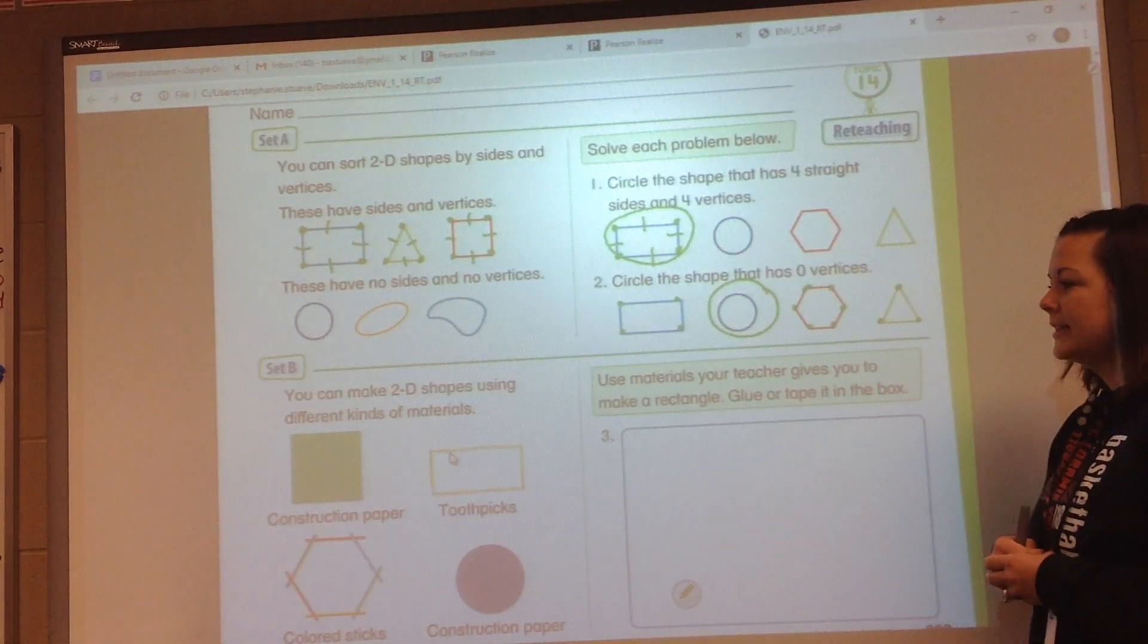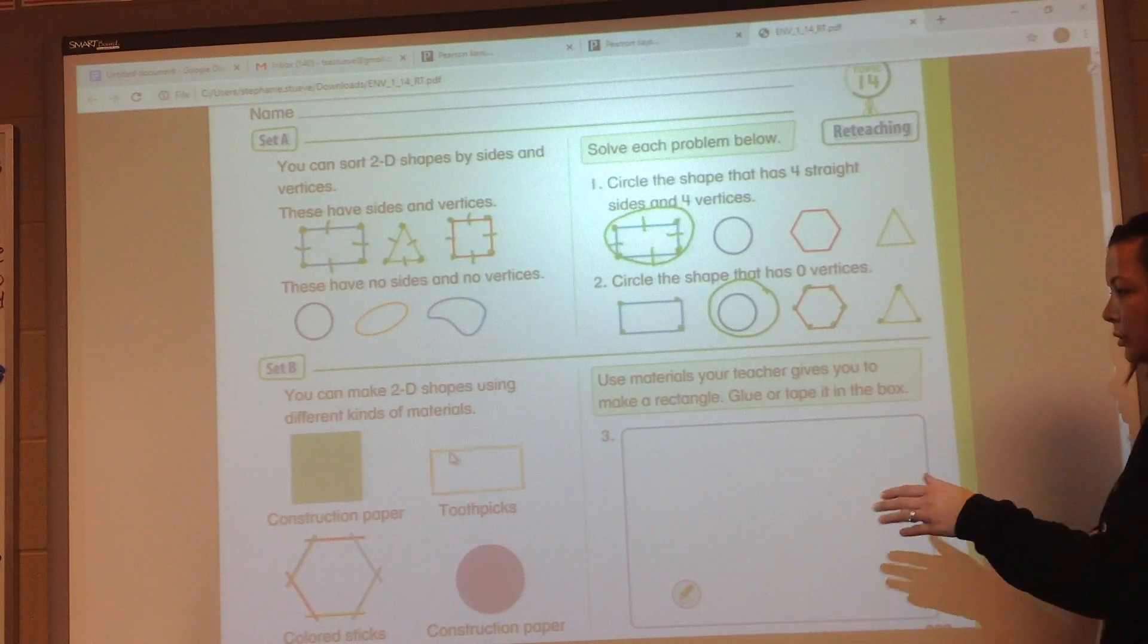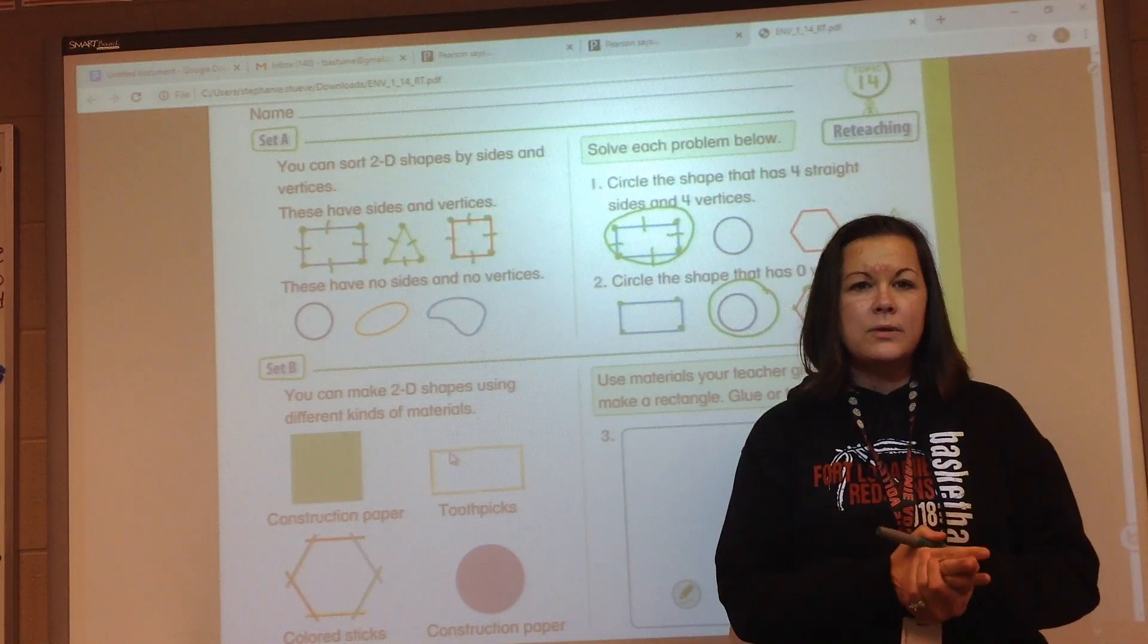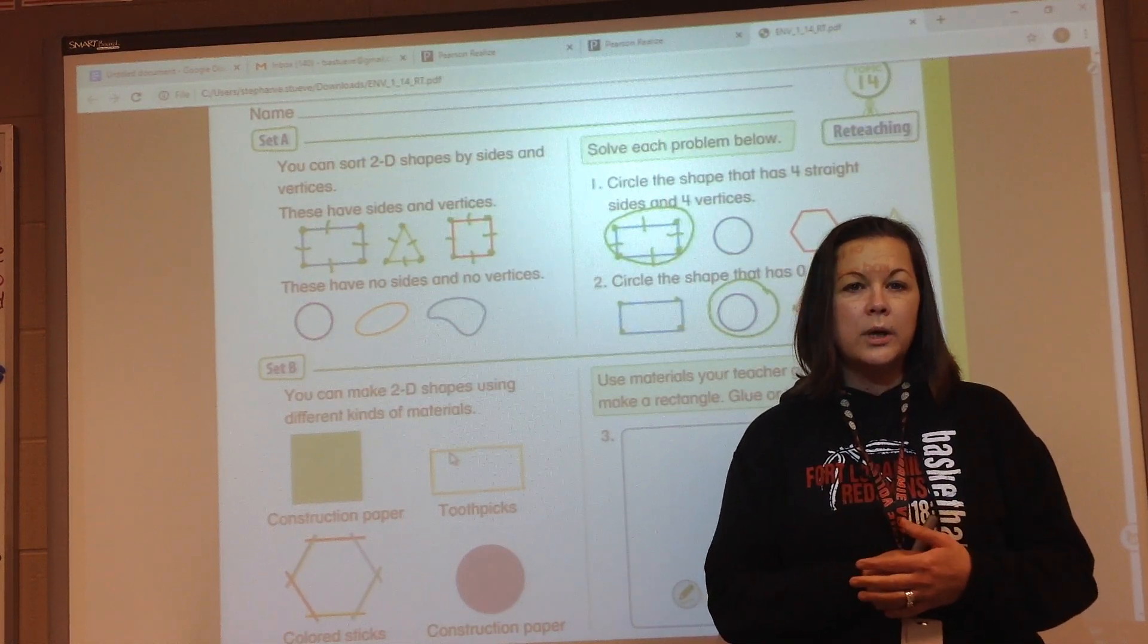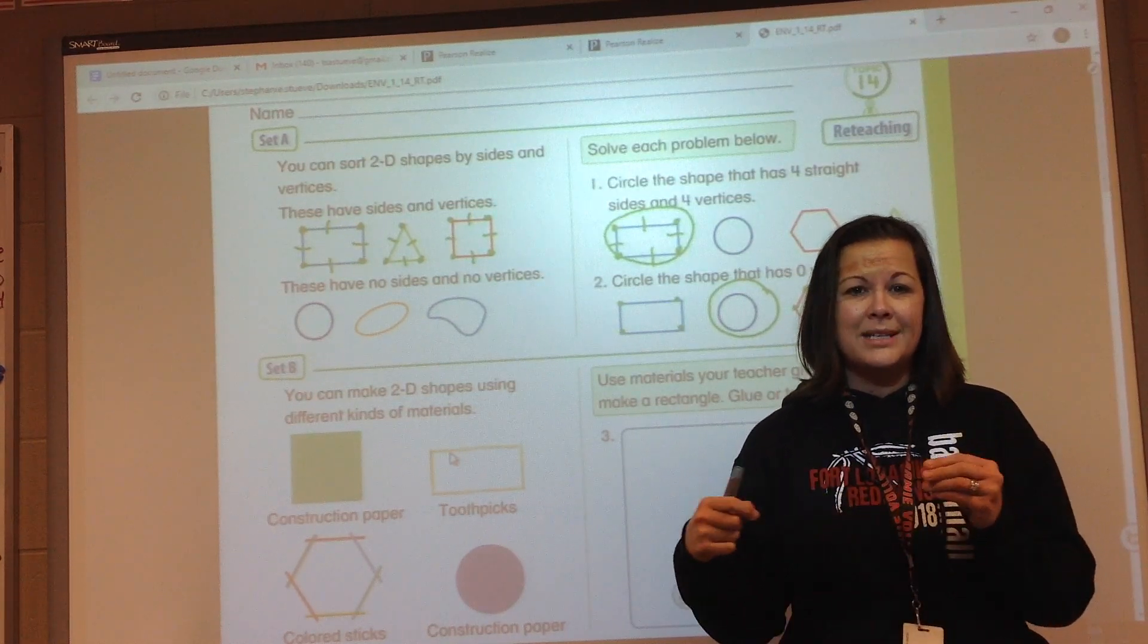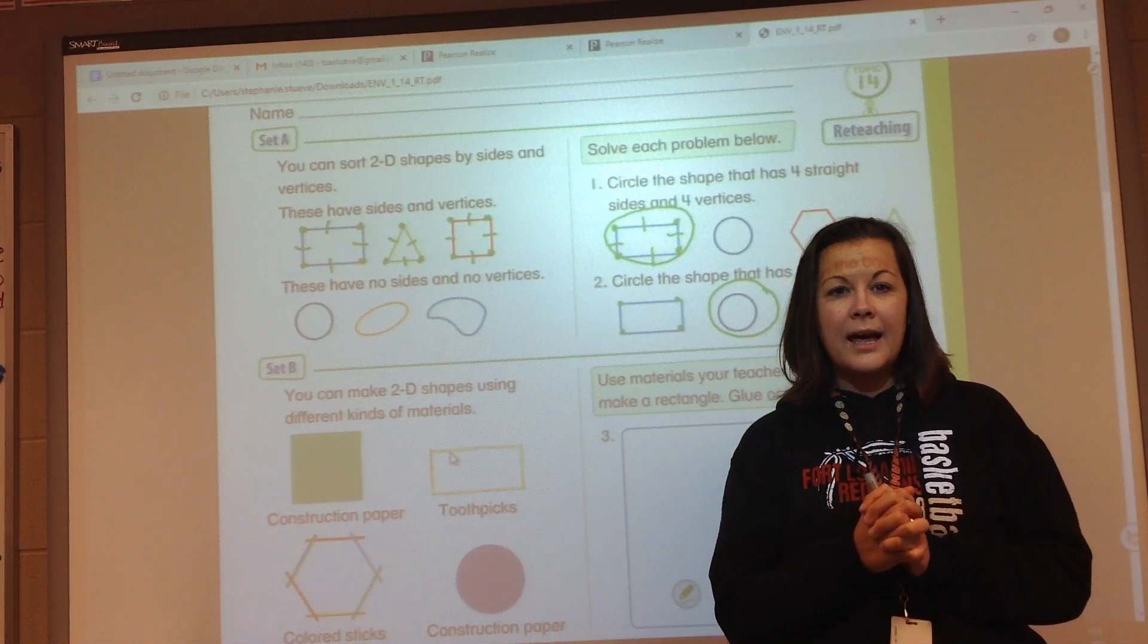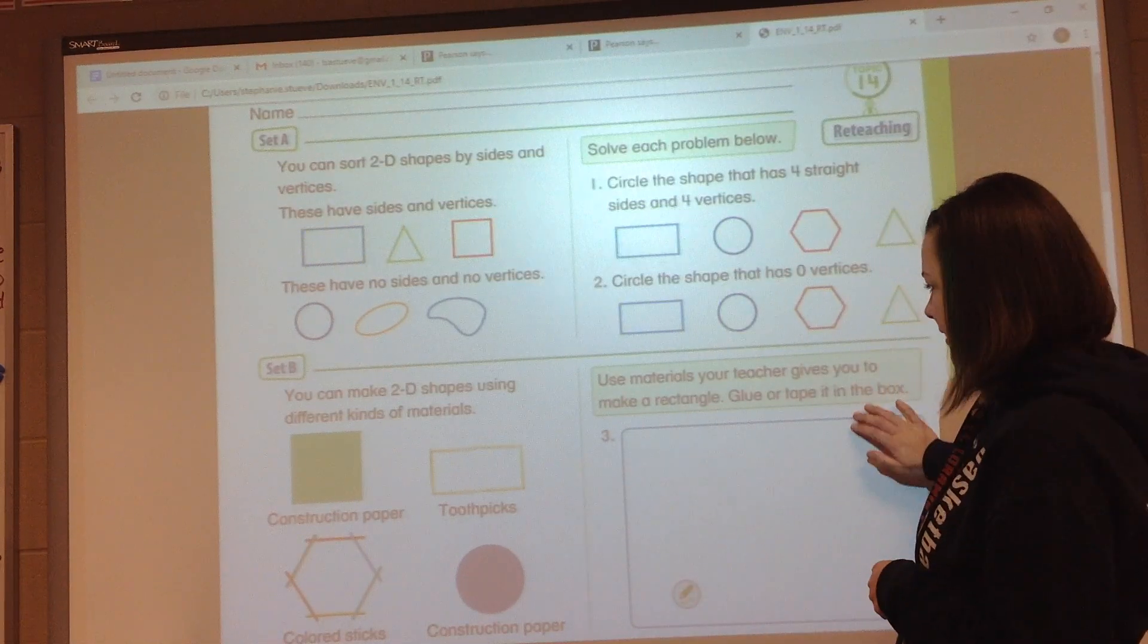Now over here in Set B, it says use materials your teacher gives you to make a rectangle, glue or tape it into the box. All right boys and girls, I'm going to let you do that one. You're going to need to pause, get some sort of materials out. If you want to use construction paper, go ahead and do that. If you want to use strings or rubber bands and cut them and tape them on there, that works too. When you're ready and finished with that, go ahead and unpause and we'll work on Set C.